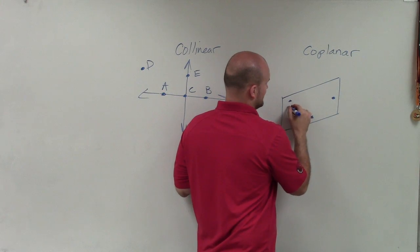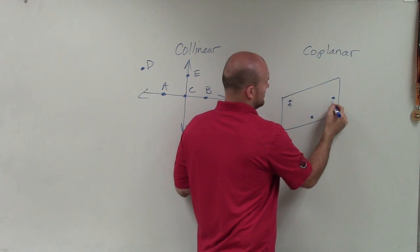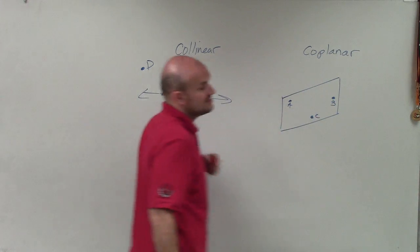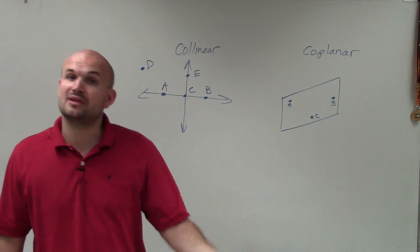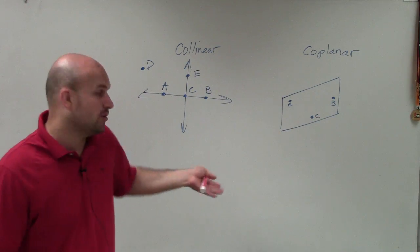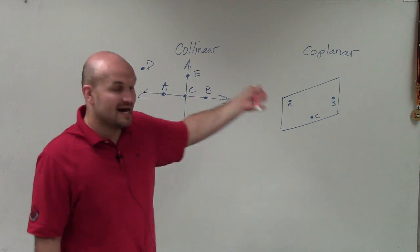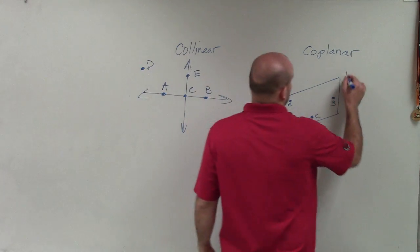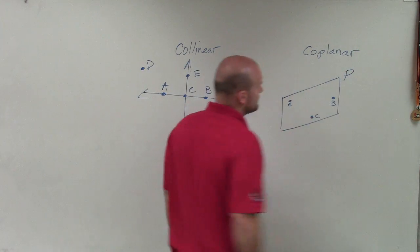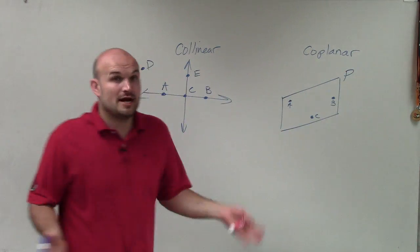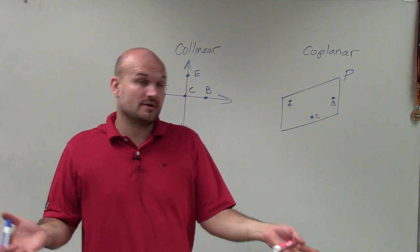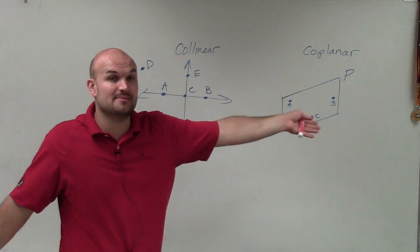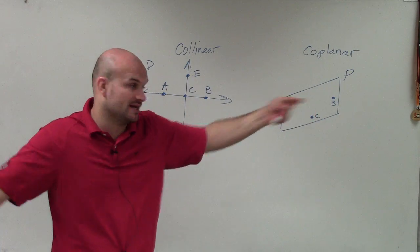So let's call these points A, B, and C. They lie on the same plane. So since these points all lie on the same plane, let's call this plane P — then they are coplanar. Just like collinear, they lie on the same plane, so they're coplanar.